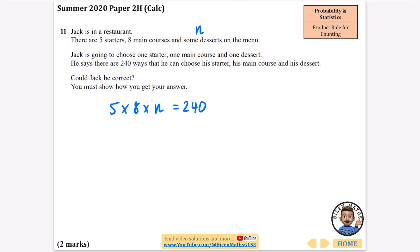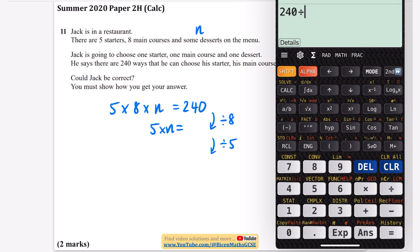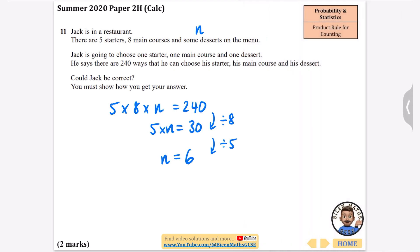I'm going to do this on my calculator. I'm going to divide by the eight and then divide by the five. If I divide by the eight I would have 5 times N, and 240 divided by 8 is 30. And then if I divide that by 5, 30 divided by 5 is obviously 6. And you can check that it's right because if I do 5 times 8 times 6, I do get 240. So could Jack be correct? Well yes.